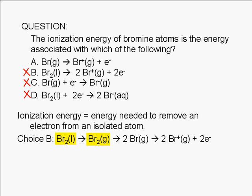Choice B involves much more than just ionization of bromine atoms. It involves vaporization of diatomic bromine molecules, followed by the dissociation of the diatomic molecules in the gas phase to individual bromine atoms, then by the ionization of the bromine atoms.